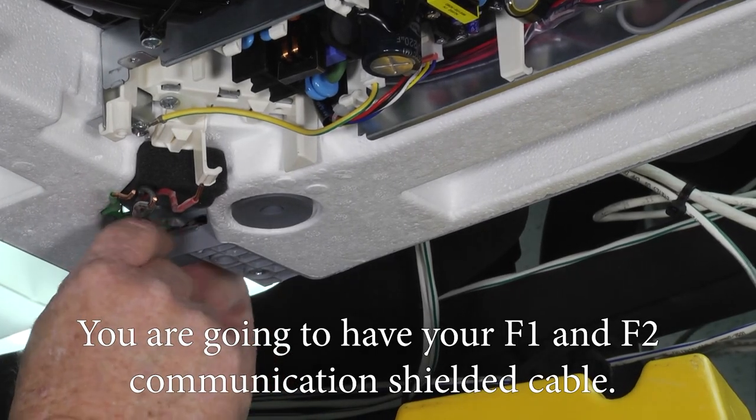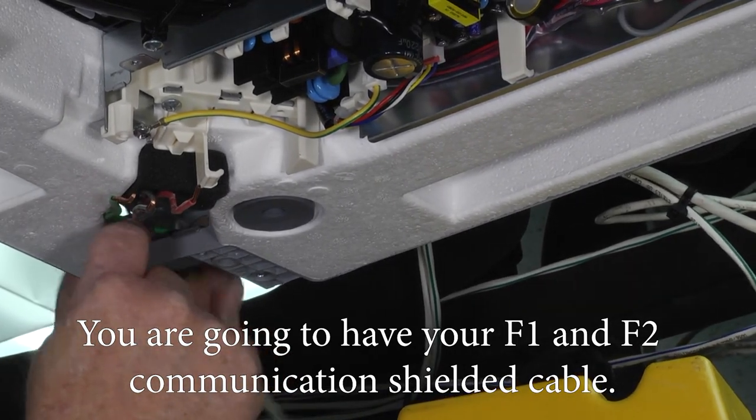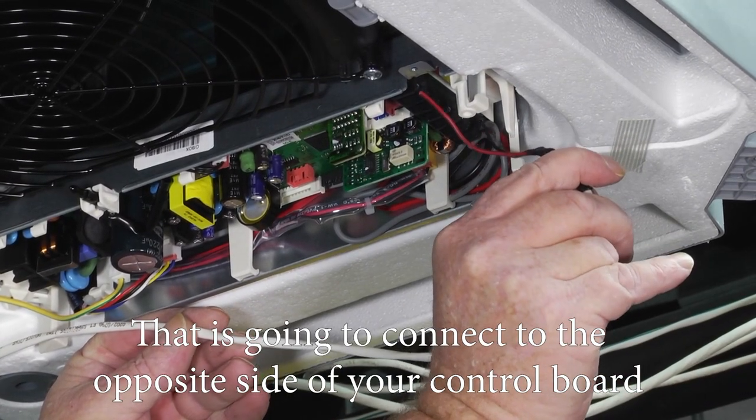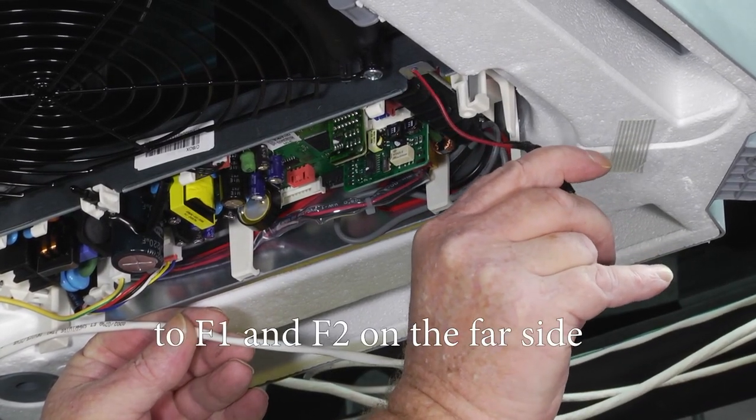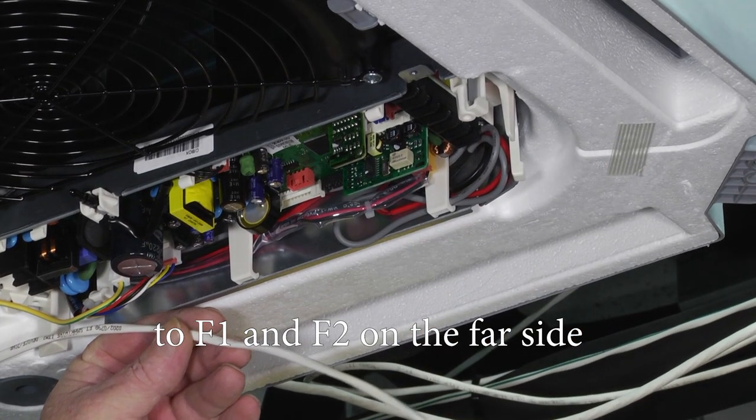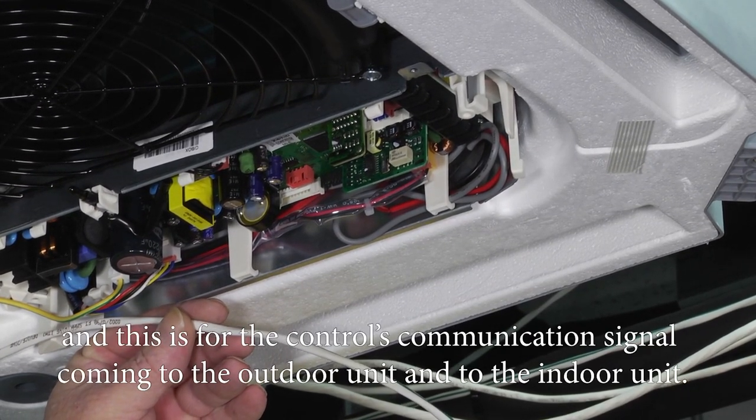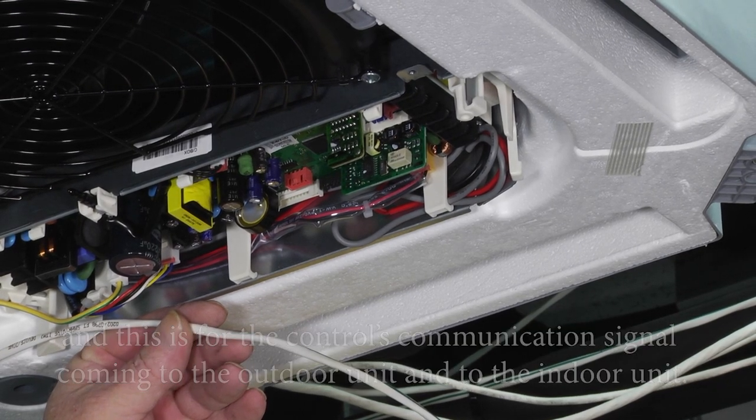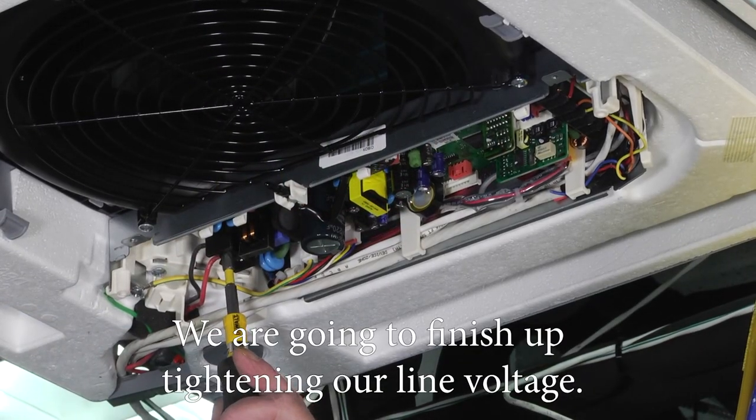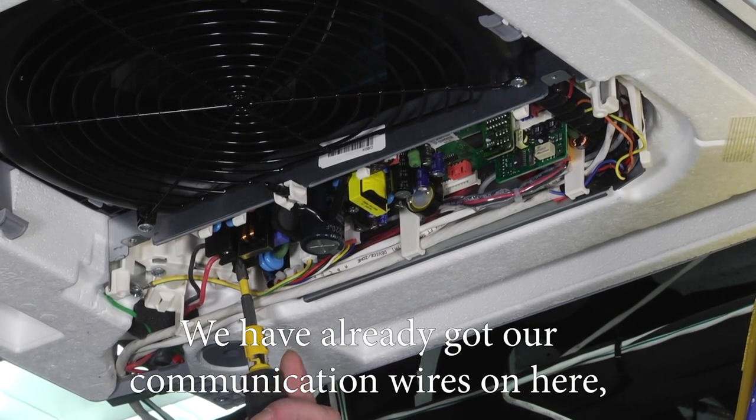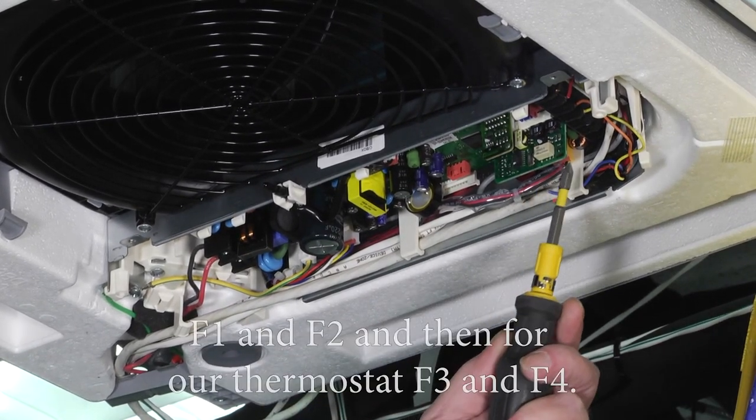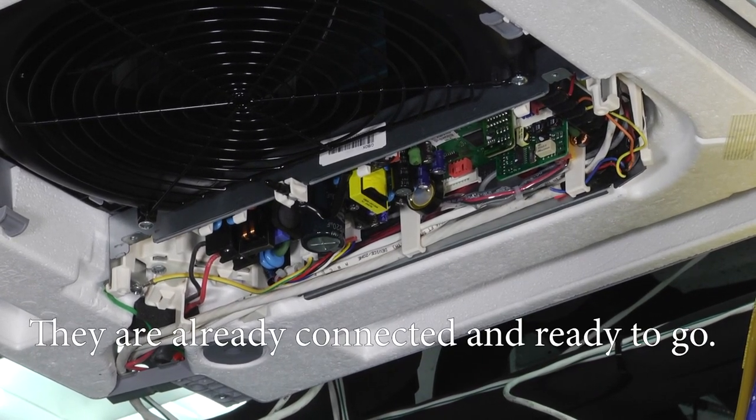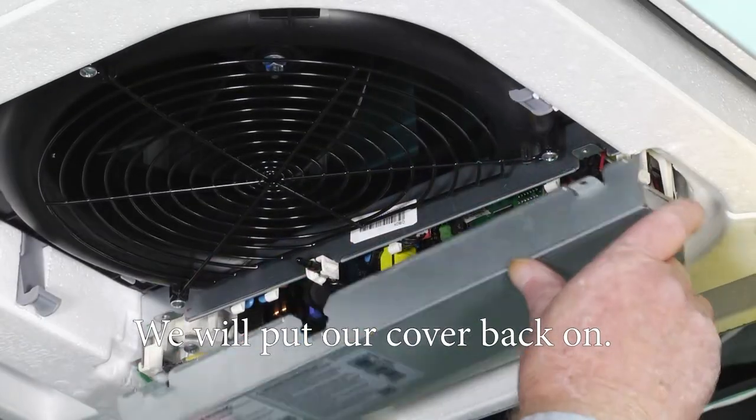You're going to have your F1, F2 communication shielded cable. That's going to connect to the opposite side of your control board to F1, F2 on the far side, and this is for the controls communication signal coming to the outdoor unit and to the indoor unit. We're going to finish up tightening up our line voltage. We've already got our communication wires on here, F1, F2, and then we'll put our thermostat F3, F4. They're already connected and ready to go. We'll put our cover back on.